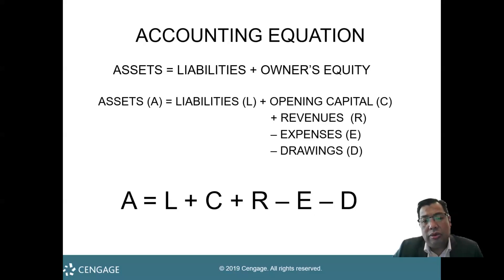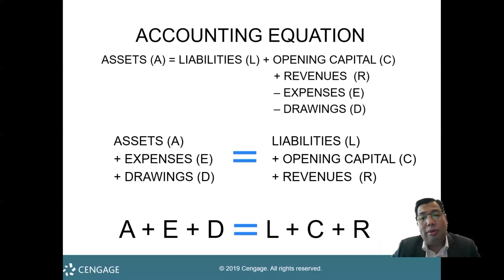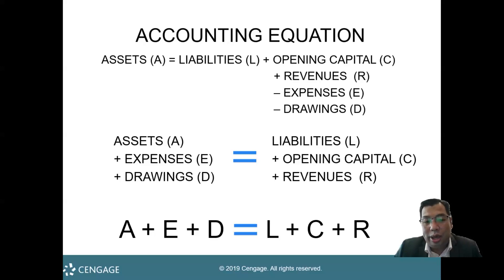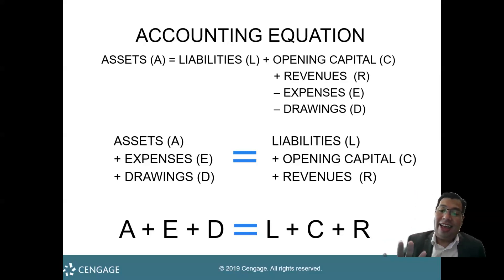If we incorporate all this into a single equation, we have: assets equals liabilities plus beginning capital plus revenue minus expenses minus drawing. Or in short form: A = L + C + R − E − D. We can rearrange this formula by bringing expenses and drawing to the left side, giving us: assets plus expenses plus drawing equals liabilities plus capital plus revenue, or A + E + D = L + C + R.